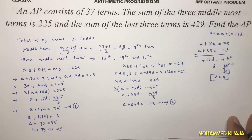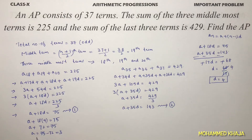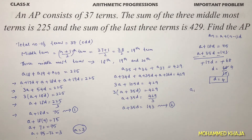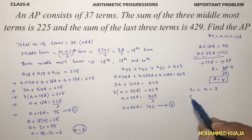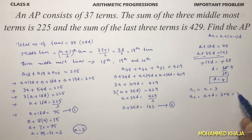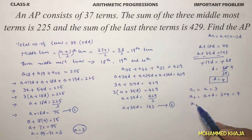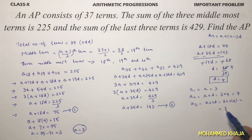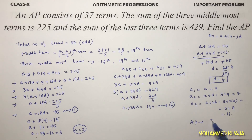The value of a is 3 and d is 4. So the first term a1 = 3, a2 = a + d = 3 + 4 = 7, a3 = a + 2d = 3 + 8 = 11. Therefore the AP is 3, 7, 11, and so on.